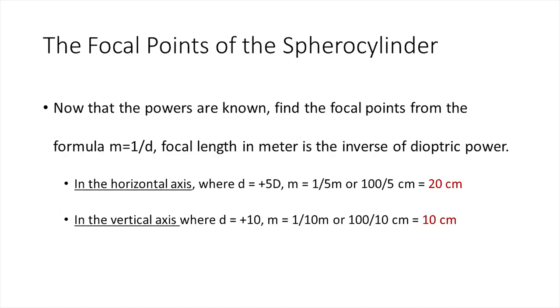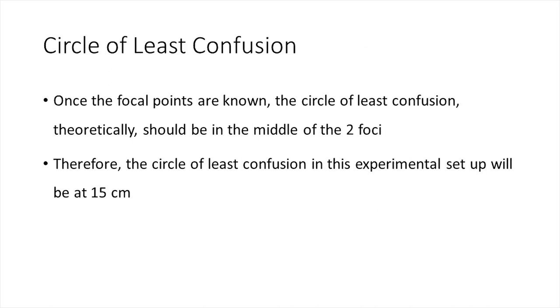We know that the focal length in meters is the inverse of the diopter power. Therefore, in the horizontal axis, where the diopter power is plus 5 diopters, the focal length or the focal point will be 1 by 5th of a meter or 20 centimeters. Similarly, in the vertical axis, the focal point can theoretically be calculated as 10 centimeters. And as the circle of least confusion should be in the middle of the two foci, in this experimental setup, we theoretically place it at 15 centimeters.